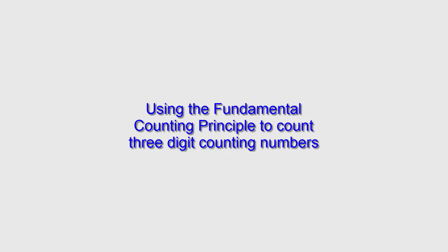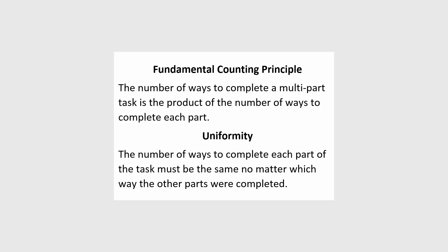Hi, I'm Ms. Hearn. Let's get started. According to the Fundamental Counting Principle, we can count the number of ways to complete a multi-part task by just multiplying together the number of ways to complete each part of the task.